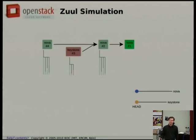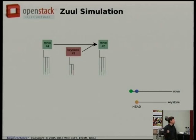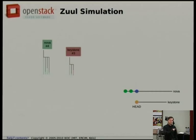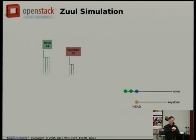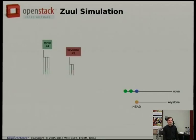Change 1 has passed all its tests and is at the head of the queue, so it gets to merge. Change 2 is now at the head of the queue, has passed, and gets to merge. Change 3 is still around in case change 2 had failed and needed to restart it, but change 2 passed — so change 3 is now at the head of the queue and has failed, so we discard it. Finally change 4 is at the head of the queue and can merge.